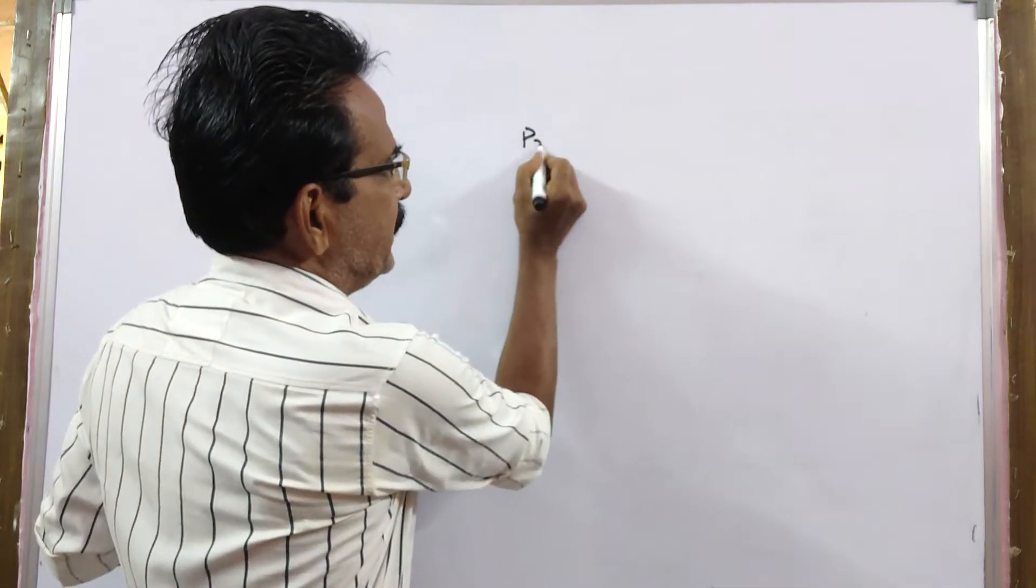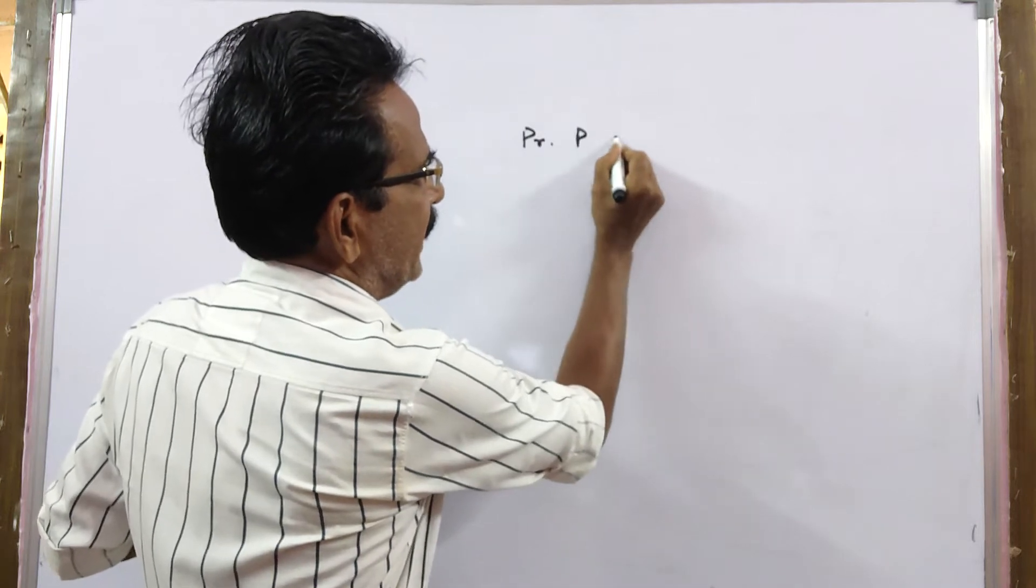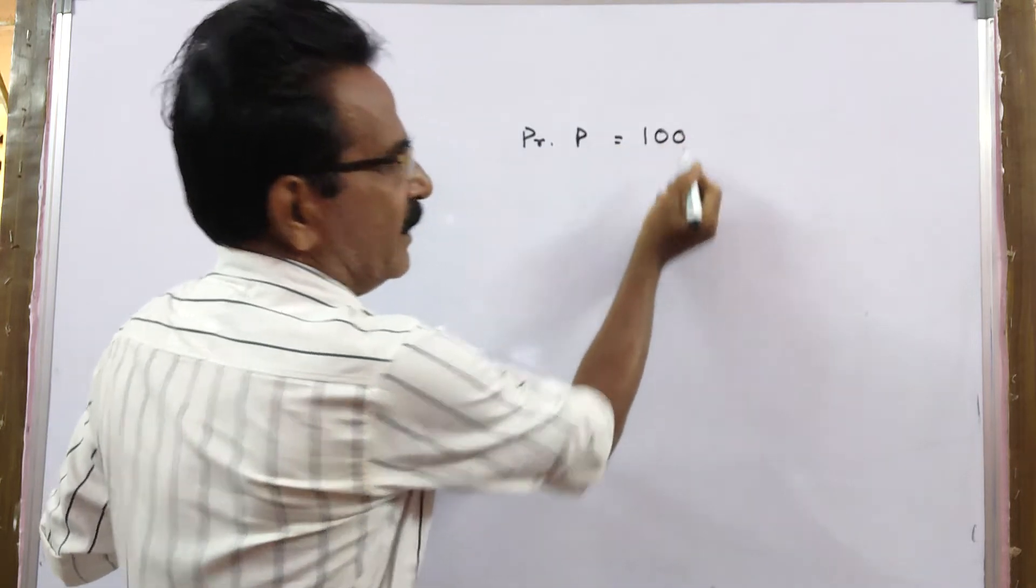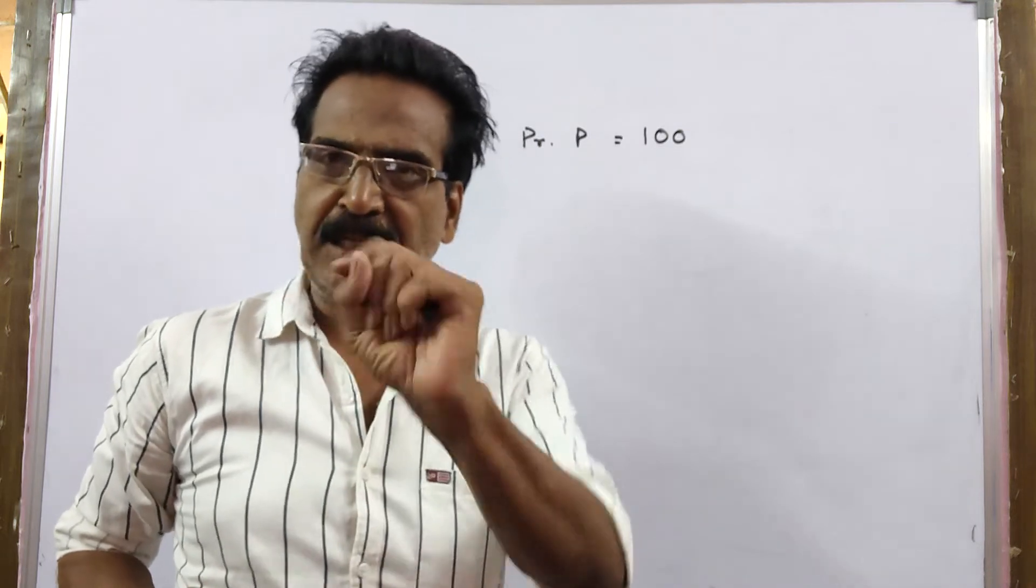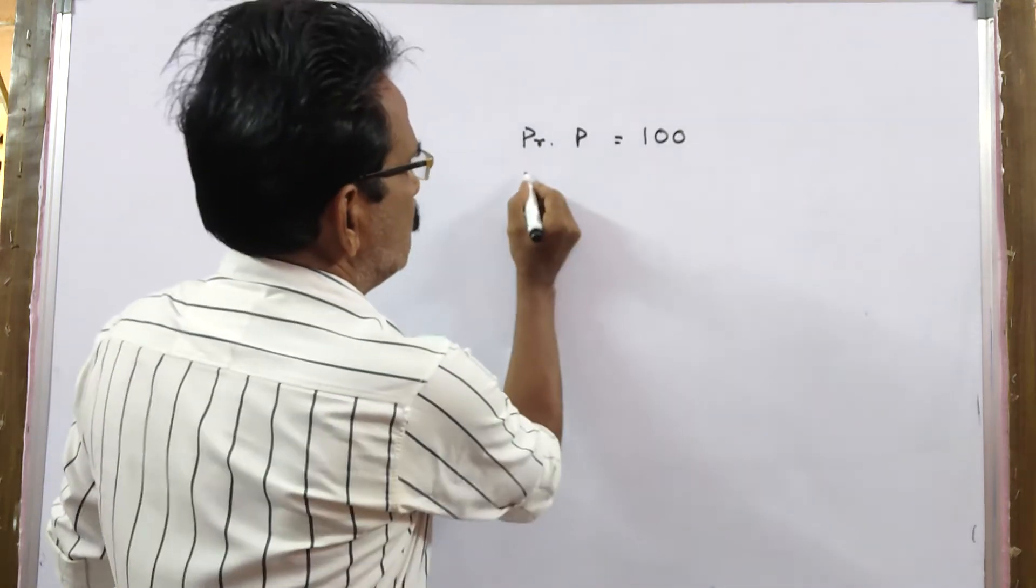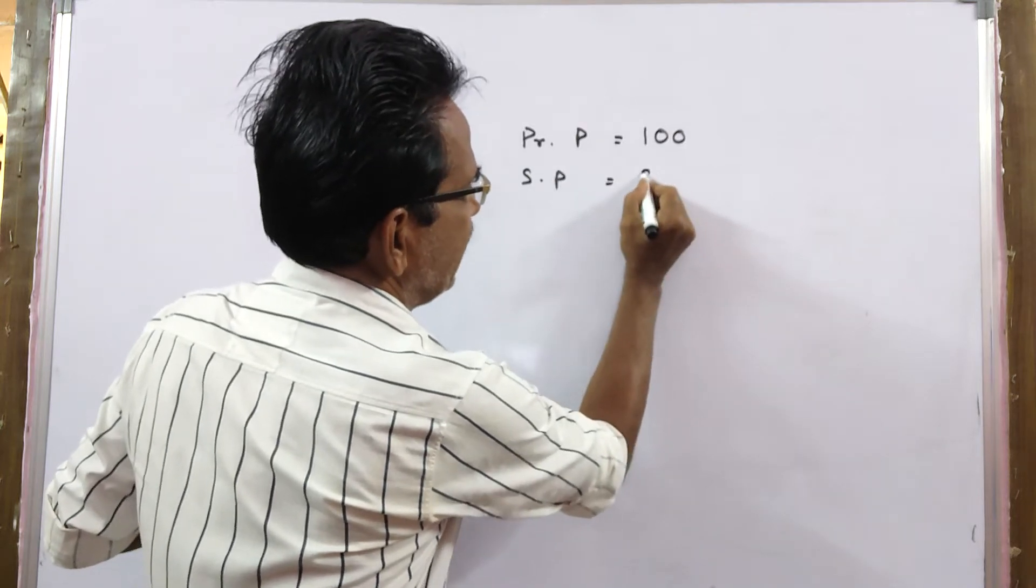Say printed price is 100 rupees. Then the sold price will be 80 rupees because 20% discount is there. So sold price will be 80.